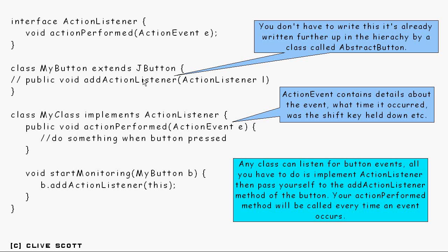And when the button gets pressed, what happens is, somewhere up in here, it goes through all this list of ActionListeners that it's got, and for each one on that list, it calls the ActionPerformed, which is just what you want to happen, really.